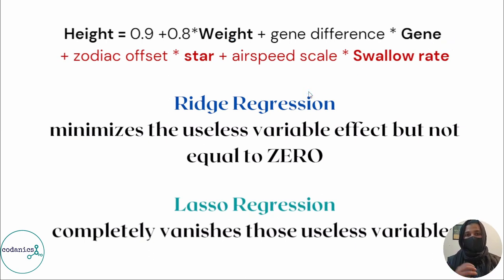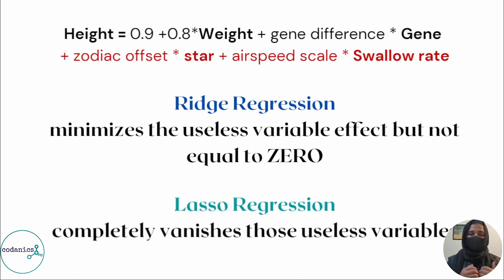So there are two differences. If you have data with many useless variables and you want to identify which variables actually predict height or your outcome, then you use Lasso Regression. And if your data has many variables but the dataset size is small, and you believe all variables may have some contribution, then Ridge Regression is a good approach — because it distributes the effects equally without making any coefficient exactly zero. So depending on your research question, you choose the appropriate regularization technique.